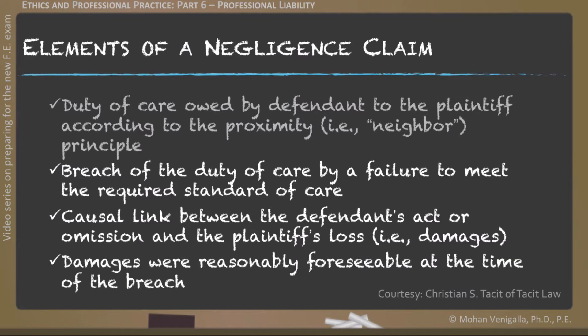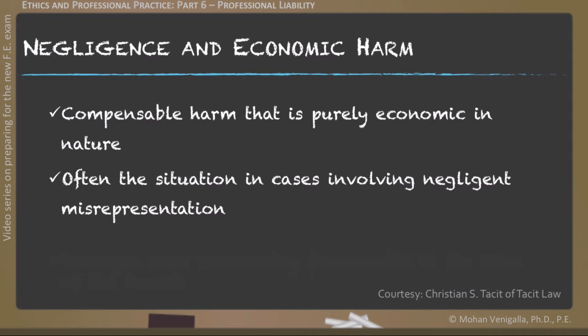Furthermore, the plaintiff should also establish that damages were reasonably foreseeable at the time of the breach. Negligence can involve compensable harm that is purely economic in nature. This is often the situation in cases involving negligent misrepresentation, which is different from negligence in general.